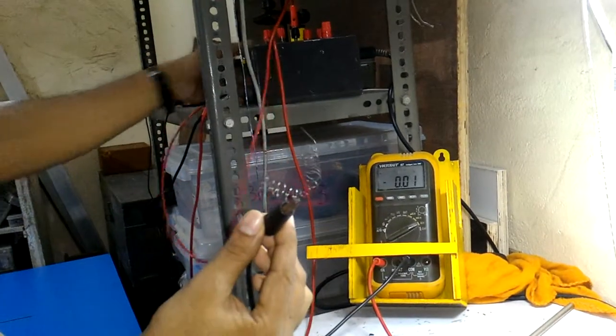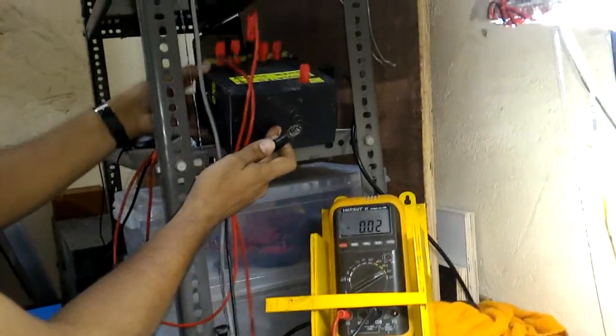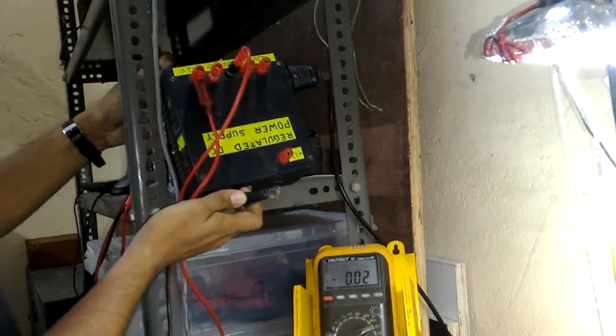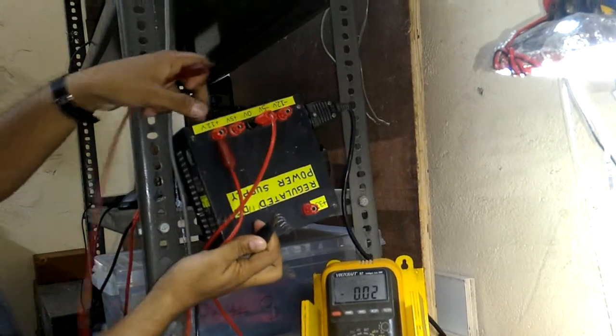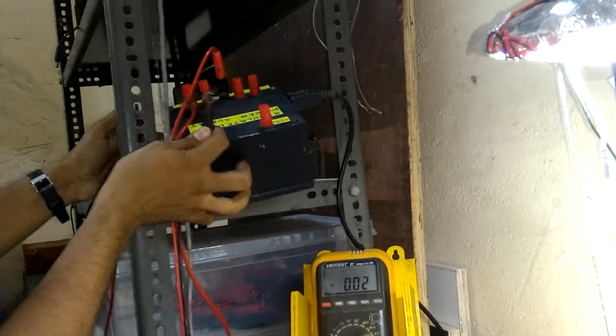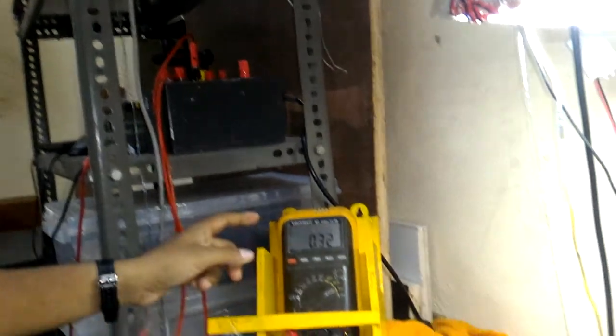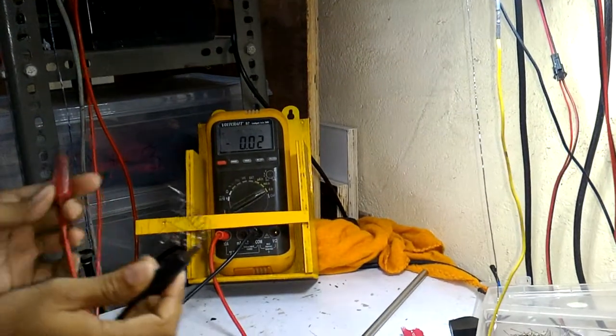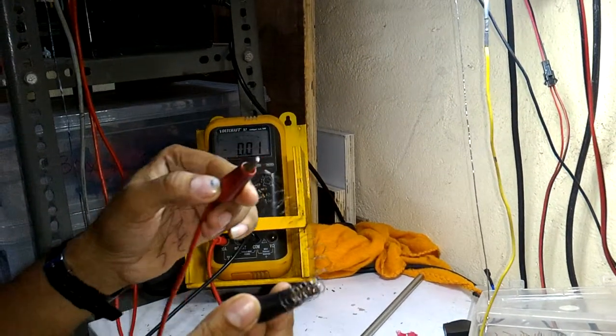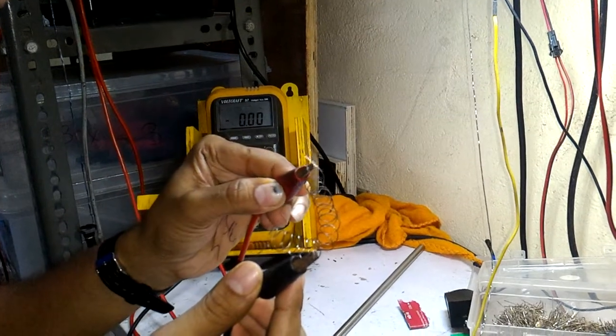Then I take my regulated power supply and connect it to the 12 volts side through an ammeter here. Now I connect it to the power supply.